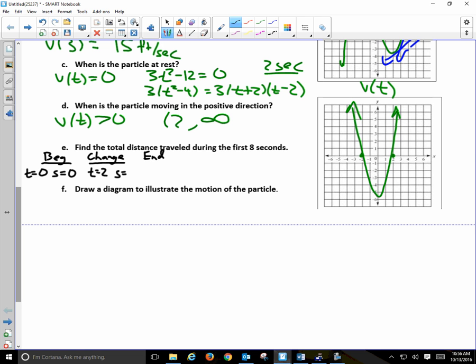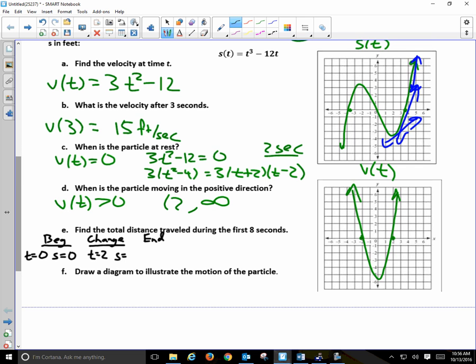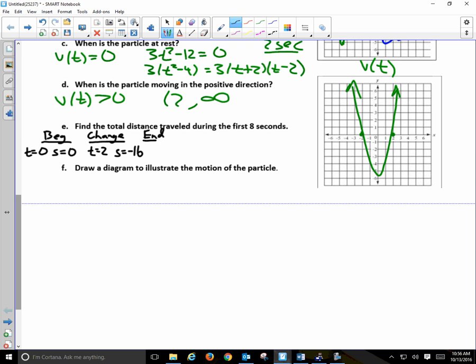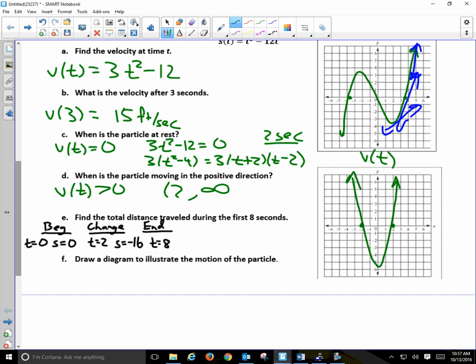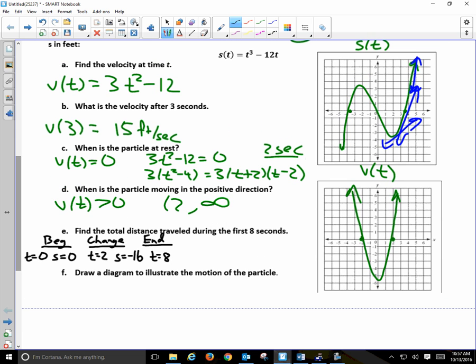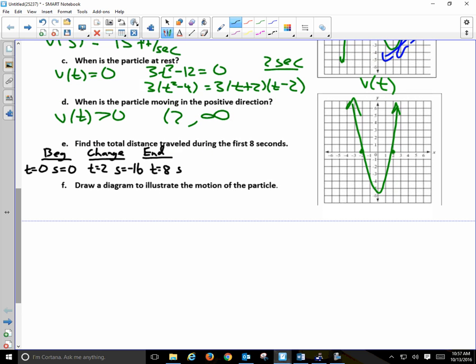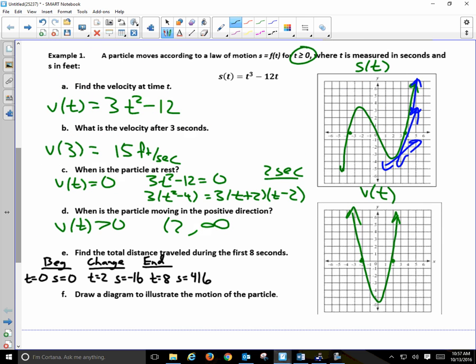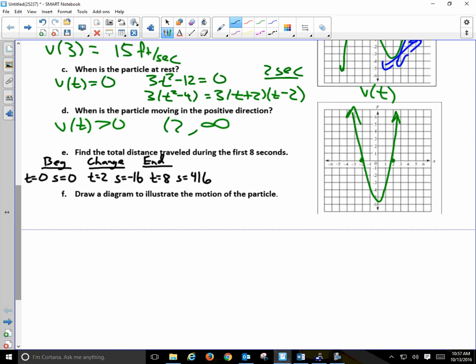So it changes at time is equal to two. I want to know its position at time two. Plug it into what? The velocity function or the position function? Position function. Two to the third is eight minus 24, negative 16. My end, the time is equal to eight. It says over the first eight seconds, so I'm stopping at eight. Again, I need to plug it into the position function. Eight to the third, 512 minus 96. Minus 100 would be 412, so four less would be 416. So S is equal to 416. I plugged in eight to my original function, the position function. That tells me where I'm at. You can see why we used velocity. We used velocity to figure out when it changed direction. Now, we're using position function to figure out where it is. This will be one of the very first questions you have on your test.